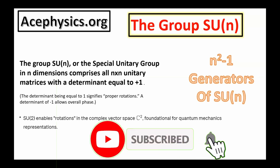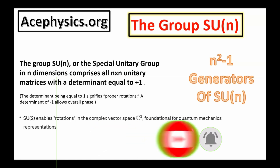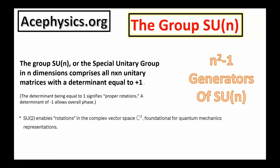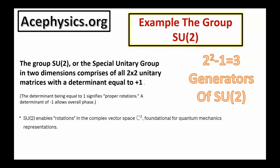The set of every unitary matrix with determinant 1 and dimension n is a group under matrix multiplication. The special unitary group SUN in n dimensions comprises all n-by-n unitary matrices with determinant equal to 1. There are n²−1 generators of the group SUN. Unitary matrices with determinant +1 signify proper rotations. For n equals 2, every 2-by-2 unitary matrix with determinant 1 is a member of the group SU2, which follows all group properties as detailed in lecture 1a.